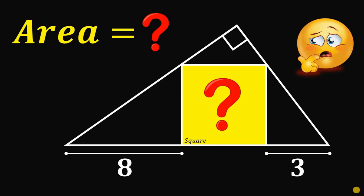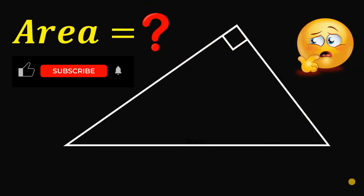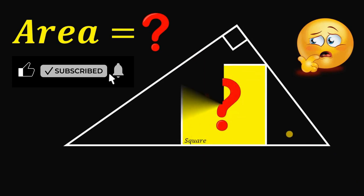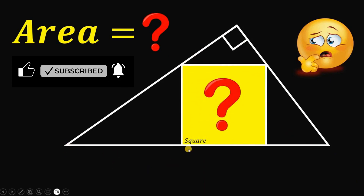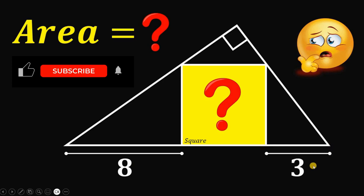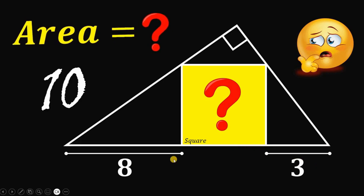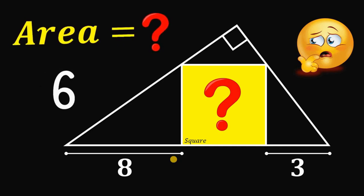Can you solve this geometry challenge? Here's the question: given this right triangle, let's draw a square inside of it. From this point to this point must be equal to eight units, and from this point to the top of this right triangle must be equal to three units. The question is: what is the area of this square? You can pause this video if you want to give this problem a try.